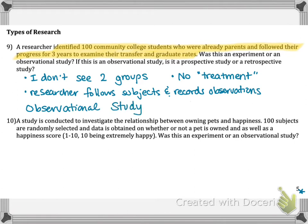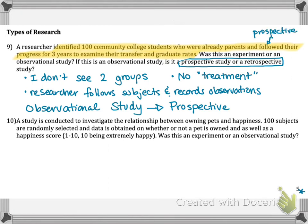Now the question we have left is: is it prospective or retrospective? We want to look at whether or not the researcher is the person collecting the information, or did somebody else collect the data and then we came along years later to analyze it? If you read this, it says they followed the progress for three years — that is active data collection. If the researcher actually followed them, that's how I know it's prospective — not that someone else did this and I came along later to try to figure out if there was any impact.